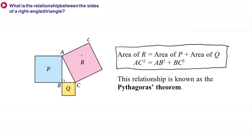Area of R is AC squared, area of P is AB squared, and area of Q is BC squared. So AC squared equals AB squared plus BC squared. This relationship is what we call the Pythagorean theorem, where AC is the hypotenuse — the longest side of the right angle triangle. We will use this theorem and manipulate the formula for various problems.